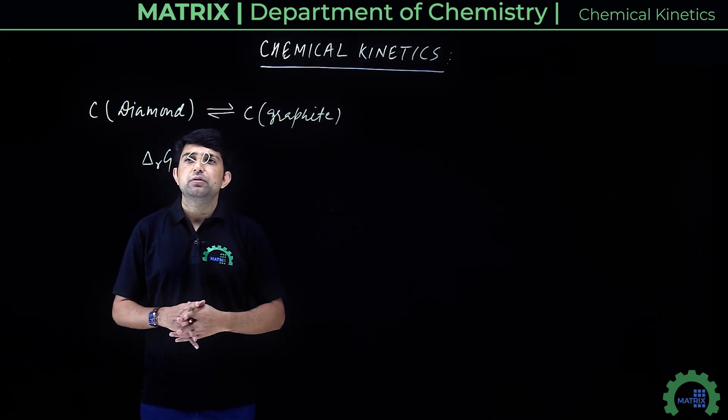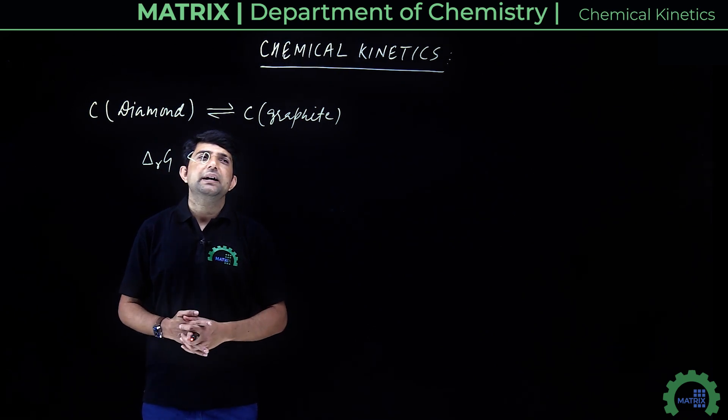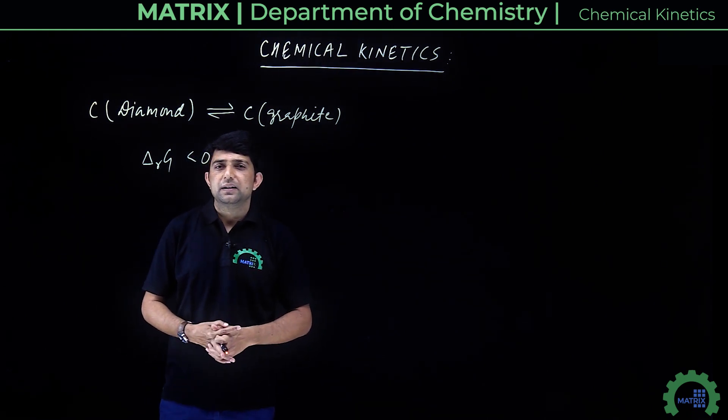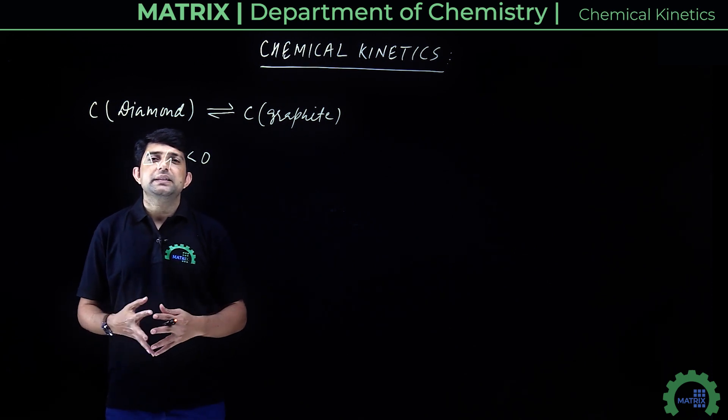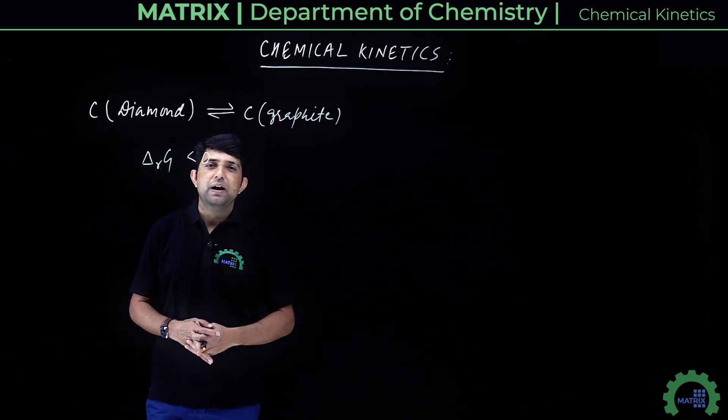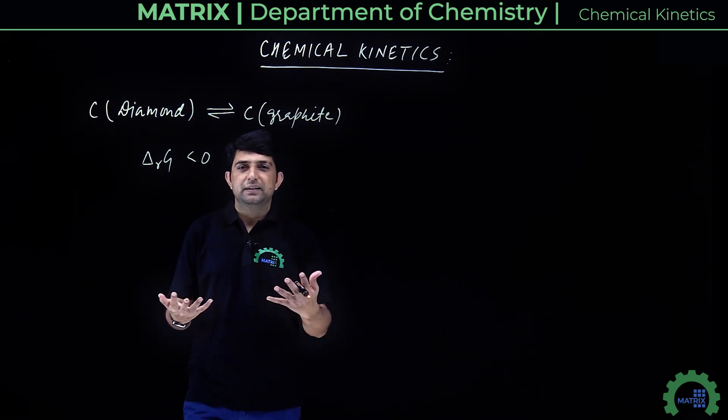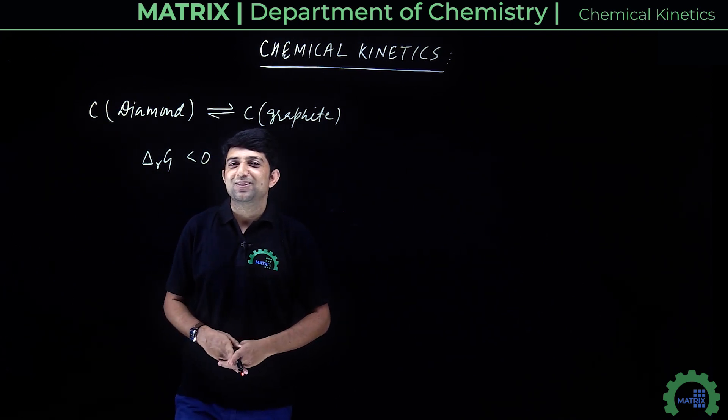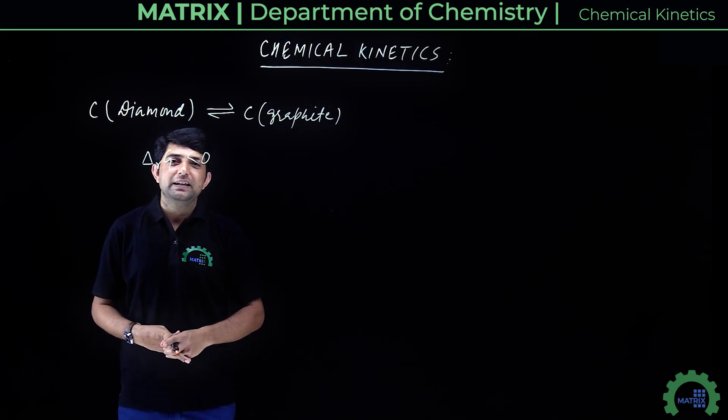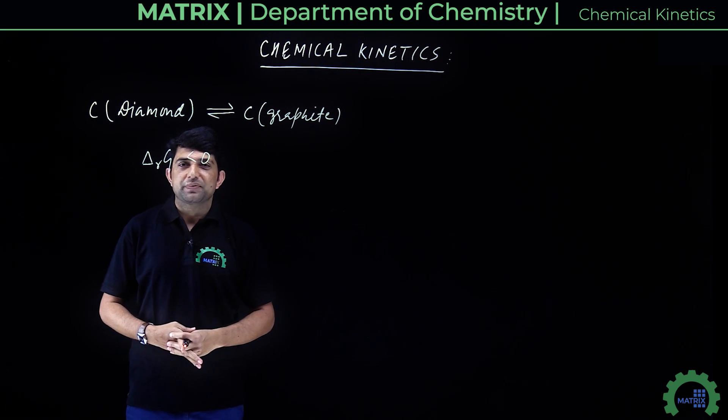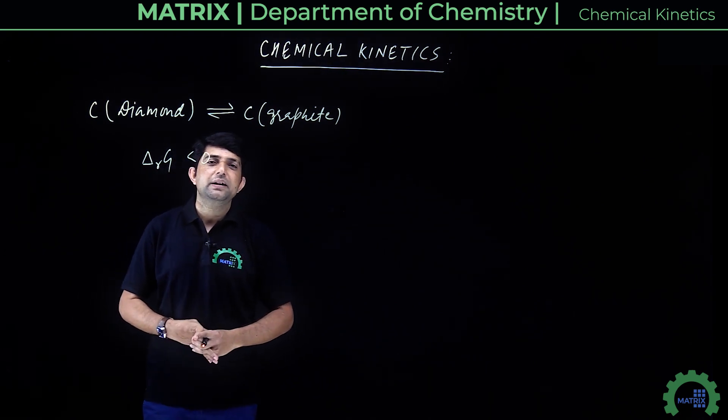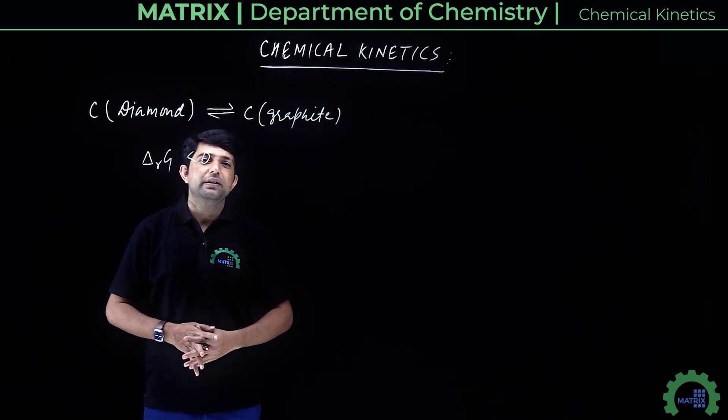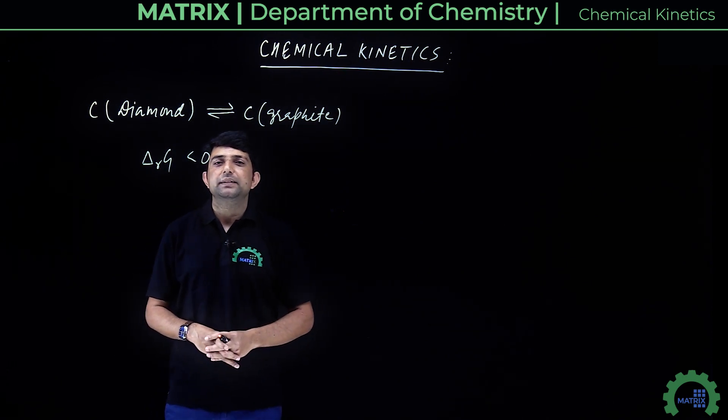Let's say we have a reaction: carbon diamond to carbon graphite. According to thermodynamics, this reaction has delta G less than zero, meaning the reaction is feasible. According to thermodynamics, at certain conditions, diamond can convert into graphite.